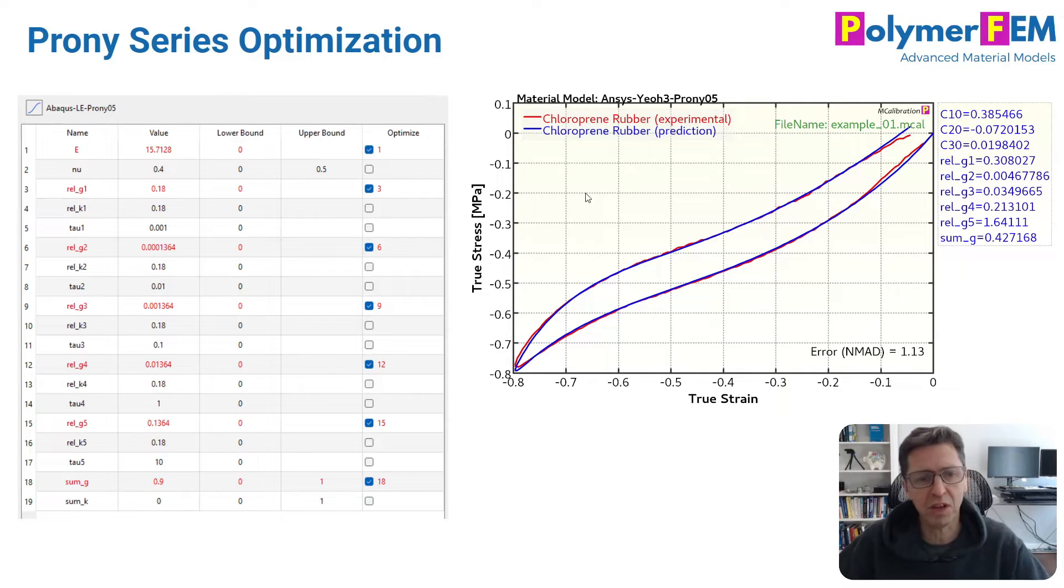And traditionally the Prony series are given by the g values which is the shear relaxation terms, the k values which is the volumetric relaxation terms, and tau values which are characteristic times.